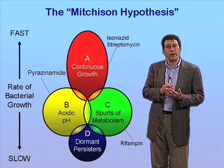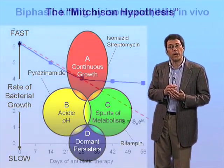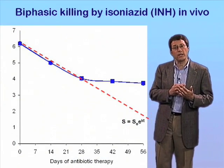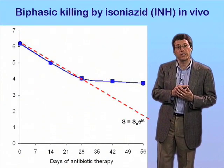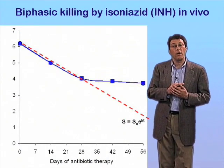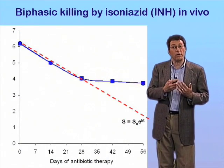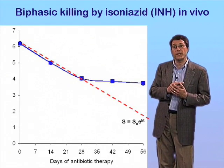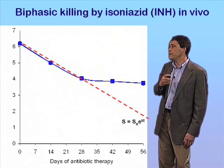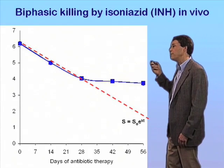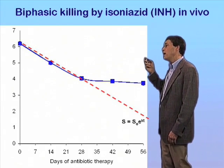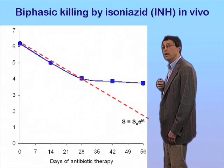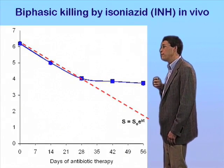This idea, which has been around for quite a while now, might explain why the kinetics of killing with the antibiotics that we use against tuberculosis are, in all cases, biphasic or multiphasic. This is an experiment in which chronically infected mice were treated with one of our front-line drugs, isoniazid, via monotherapy.